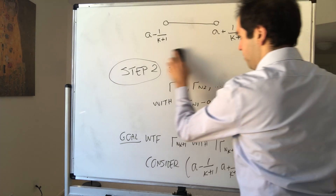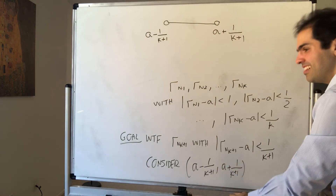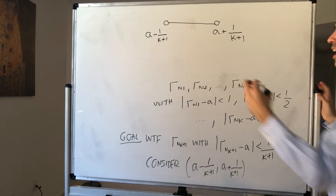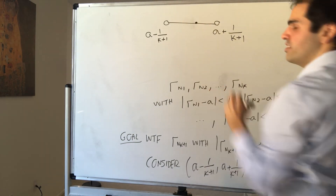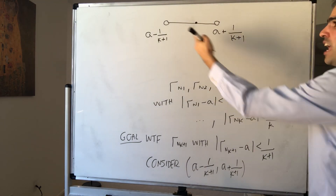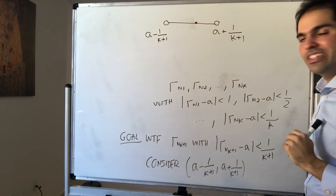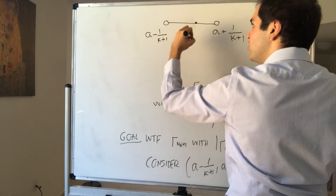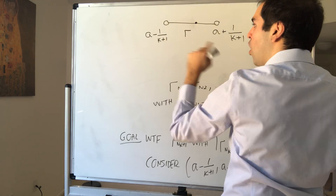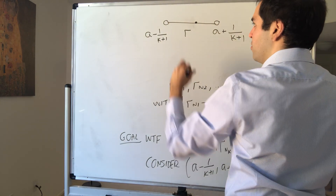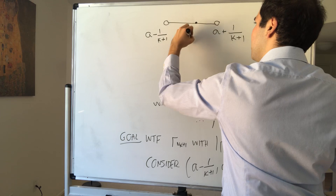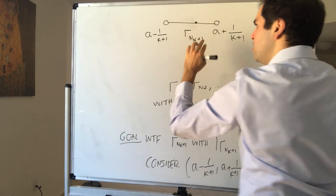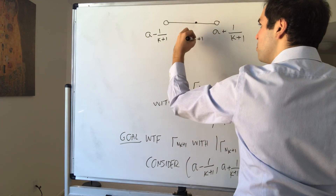Here's where it gets subtle. You might adapt the previous argument by saying: because the rational numbers are dense, there has to be at least one value r between those two real numbers, so just declare r_{n_{k+1}} to be that number. But here's the problem.